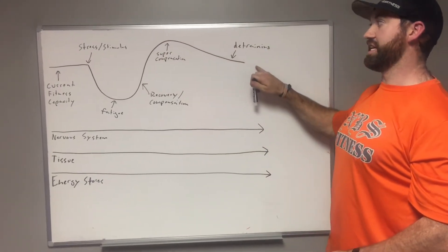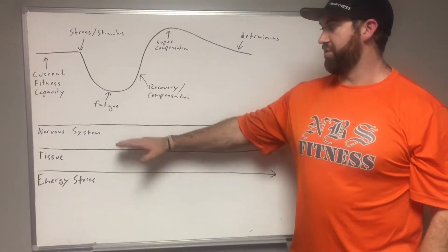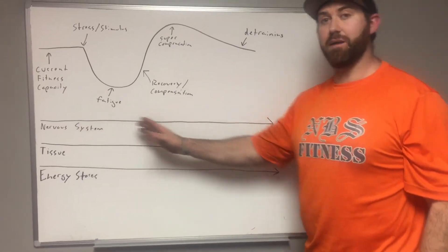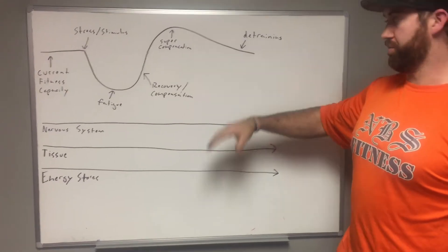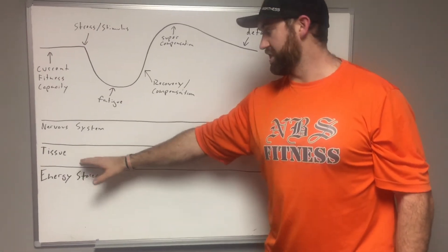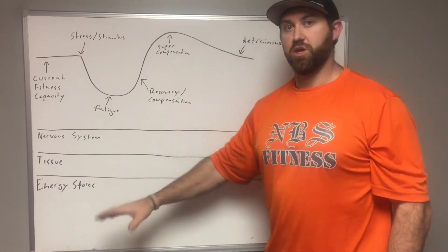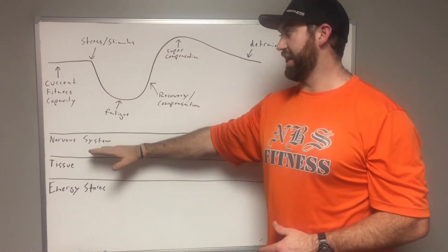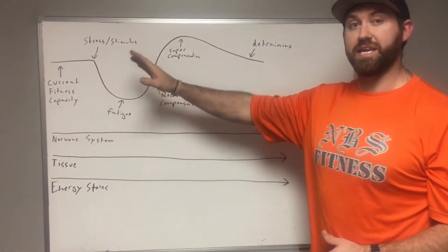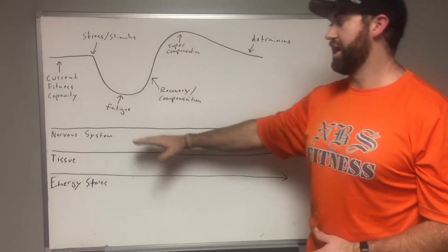There are three different areas and three different timelines that this cycle is going to occur over: our nervous system, our tissue, and our energy stores. Depending on what the stress and stimulus is, it's going to create different levels of fatigue and different time frames for recovery in each one of these.